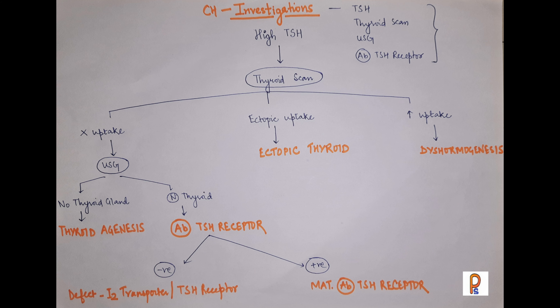If the antibody test is negative, consider an iodine transporter defect or TSH receptor defect. To summarize the approach: high TSH → thyroid scan → if no uptake, proceed to ultrasound → if no gland visible, thyroid agenesis; if gland normal, proceed to antibody test → positive means maternal antibodies against TSH receptor; negative means iodine transporter or TSH receptor defect.